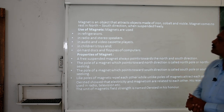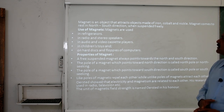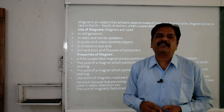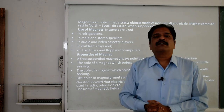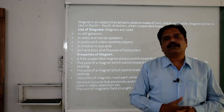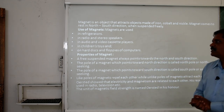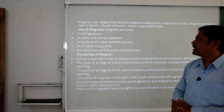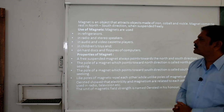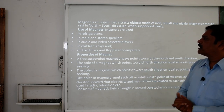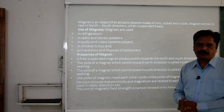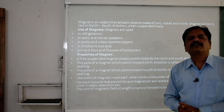The magnet aligns in the north-south direction when suspended freely. If you take a bar magnet, tie a thread in the middle, and suspend it freely — if not influenced by any other magnetic field — when it comes to a halt, it will align in the north and south direction. This is the basic feature of the magnet. In day-to-day life, magnets are used in refrigerators, radio and stereo speakers, audio and video cassette players, children's toys, and on hard disks and floppies of computers. Magnetic substances are quite useful in our day-to-day life.